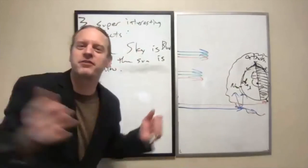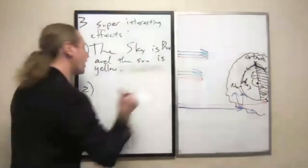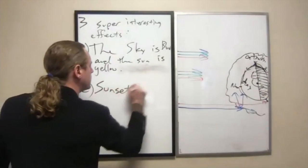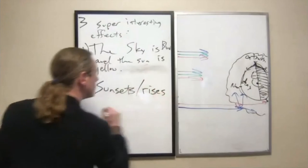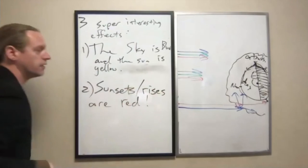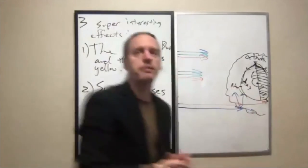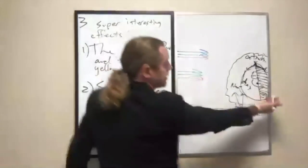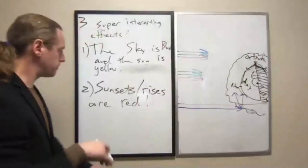So what have I just explained? Sunsets are red — or sunrises — because specifically the blue light is unable to pass through that greater atmospheric mass, but the red light is. And the same thing happens on the morning side of it.